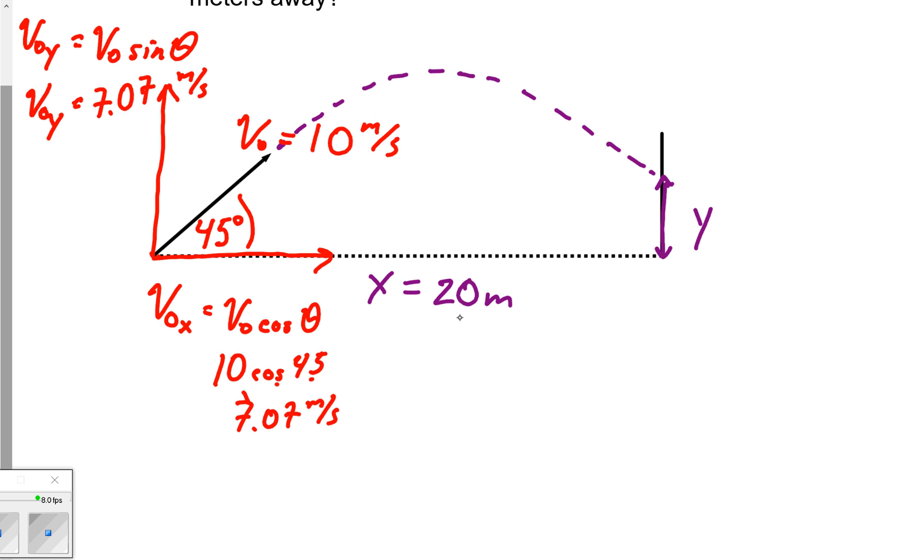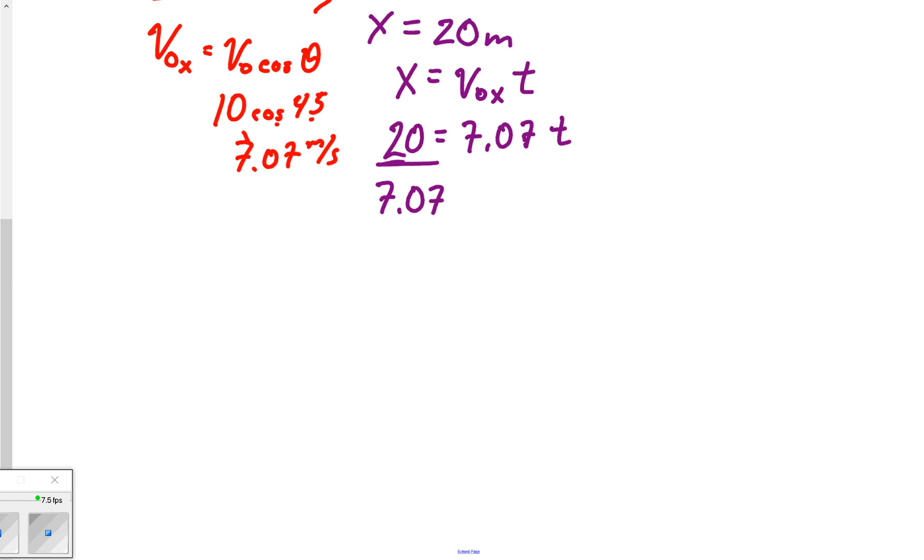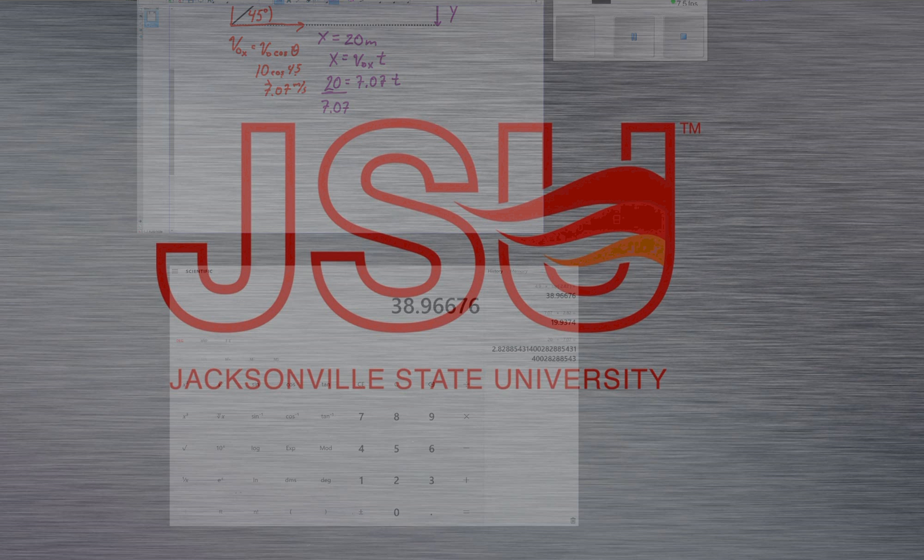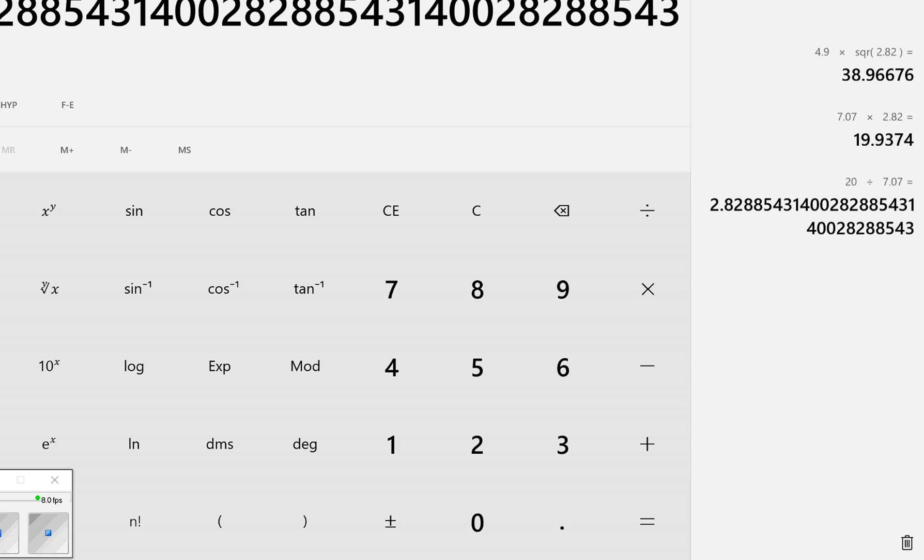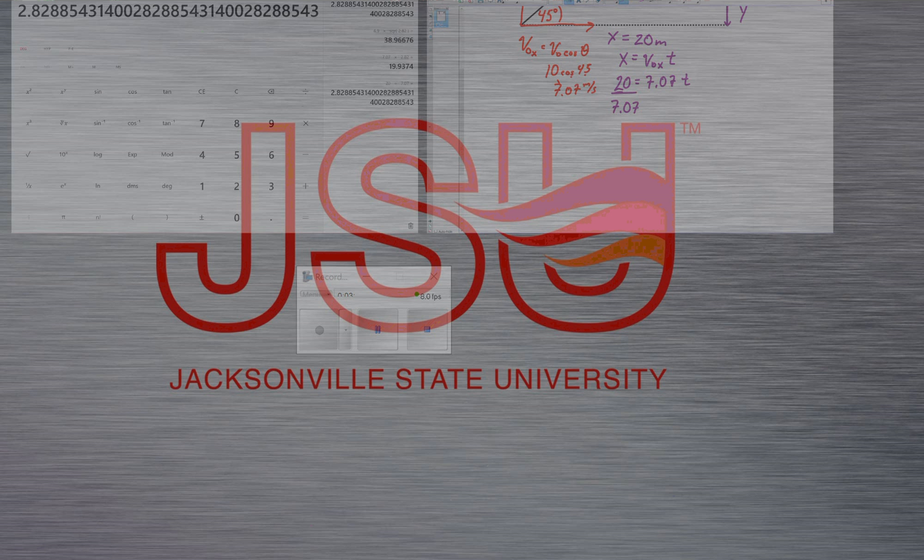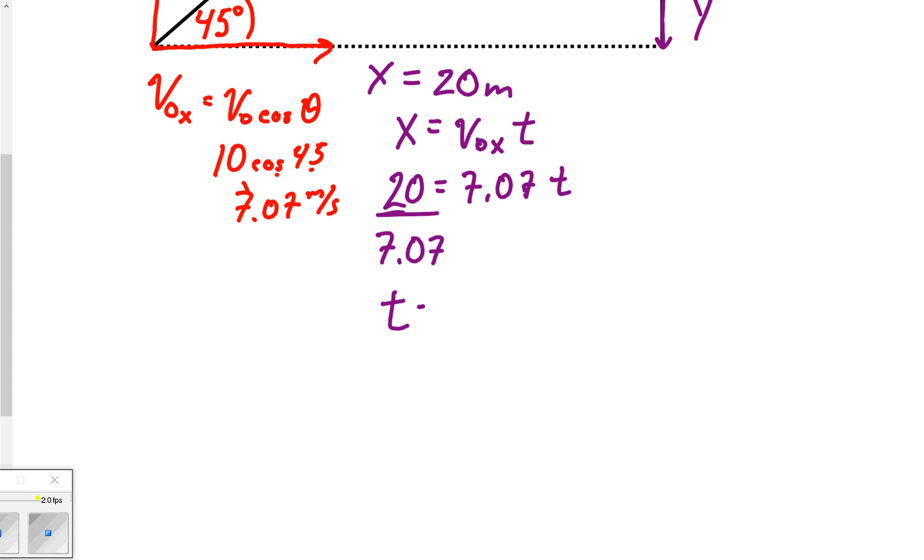Now we've got v₀ₓ and v₀ᵧ. Look, it gave us an x, and what's cool is there is only one equation good for x in a projectile: x equals v₀ₓ t. Well check it out, we already know x, we know v₀ₓ, which means we can find t pretty easily. x is 20, v₀ₓ is 7.07 t. Now divide both sides by 7.07. 20 divided by 7.07 gives 2.83 seconds.